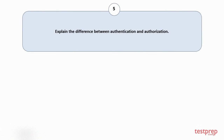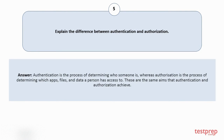Question number 5: Explain the difference between authentication and authorization. Authentication is the process of determining who someone is, whereas authorization is the process of determining which apps, files, and data a person has access to.